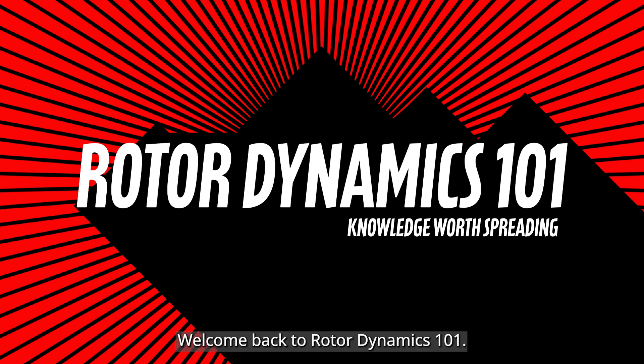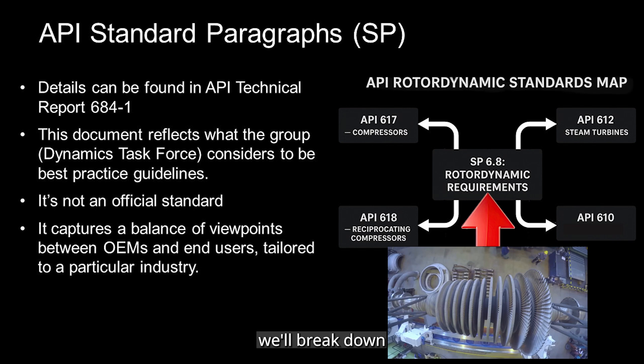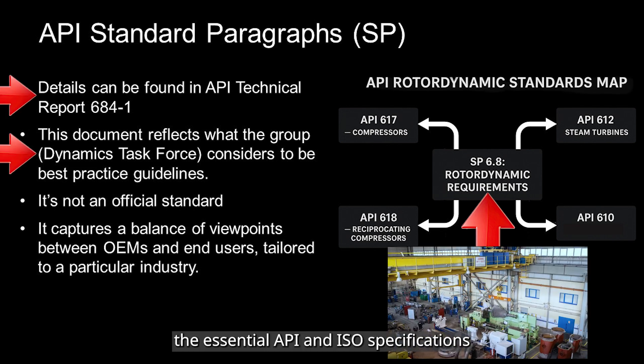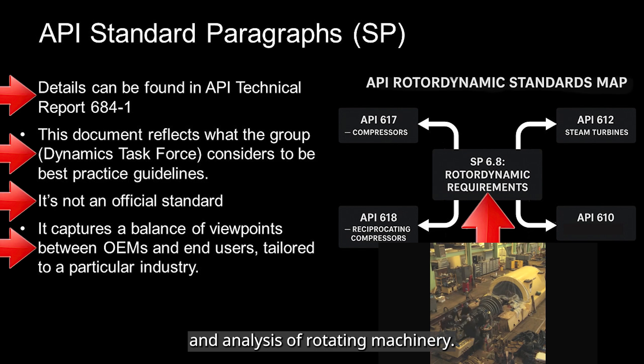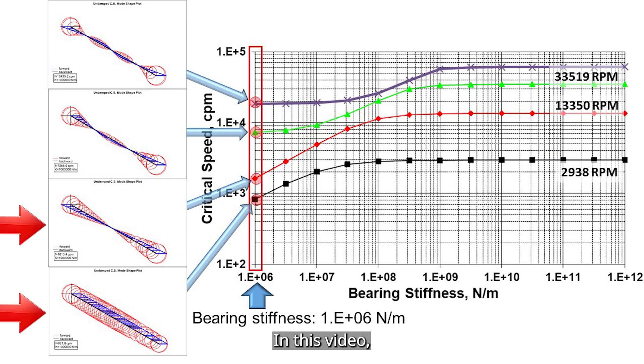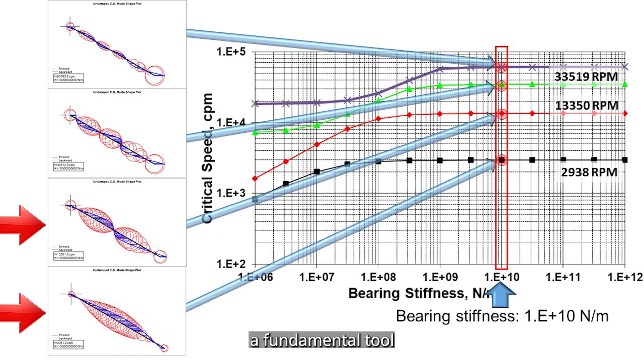Hello everyone, welcome back to Rotor Dynamics 101. In this video, we'll break down the essential API and ISO specifications that guide the design and analysis of rotating machinery. We'll also explore the undamped critical speed map, a fundamental tool in rotor dynamic analysis. So let's begin.